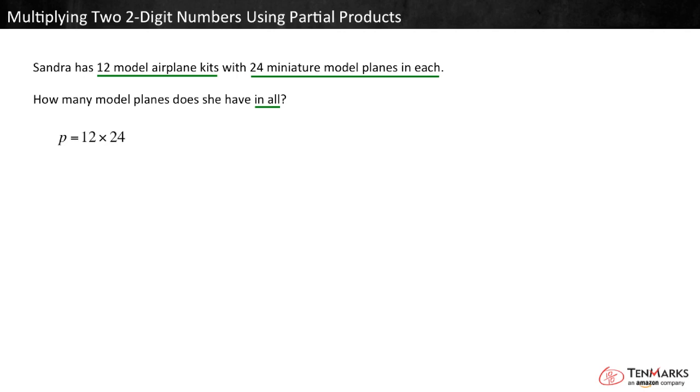We can decompose each factor to make multiplying easier. 12 is the same as 10 plus 2. 24 is the same as 20 plus 4. Now we can multiply each part of one factor by each part of the other factor.